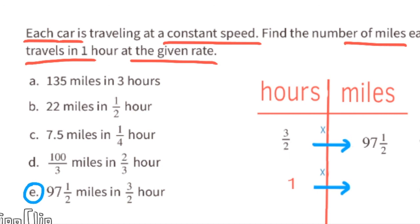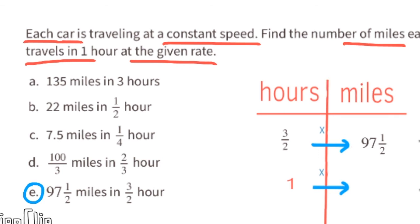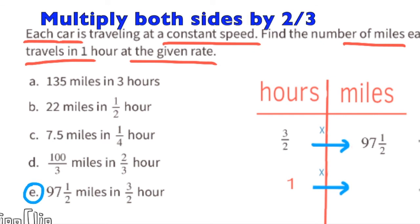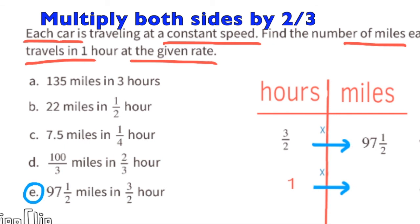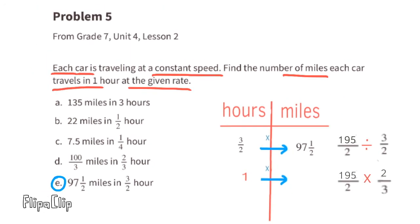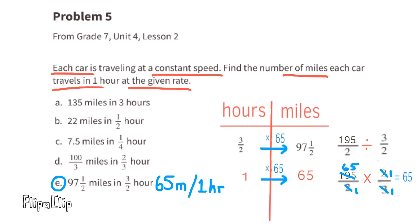The given rate for E is 97.5 miles in 3/2 hours, which is 1 and a half hours. Multiplying by the reciprocal of 3/2, which is 2/3, gives 1 hour. Converting 97.5 to an improper fraction: 2 times 97 plus 1 equals 195 over 2. Cross-canceling with 2/3: 3 goes into 195 sixty-five times, giving 65 over 1, which equals 65. Car E travels 65 miles in 1 hour.